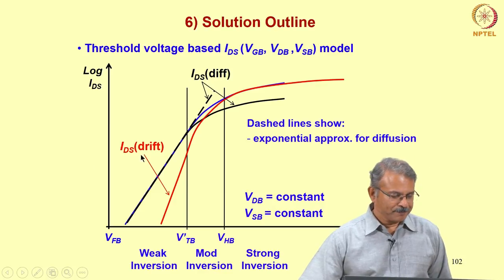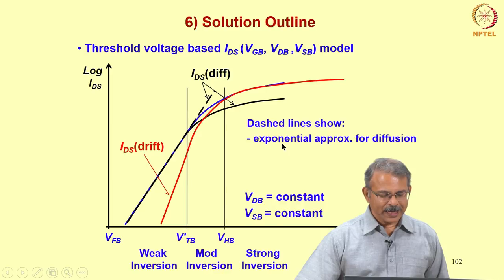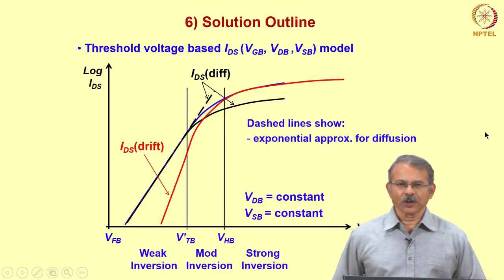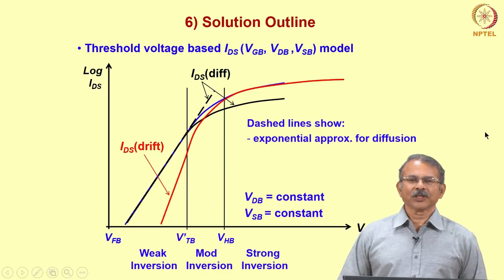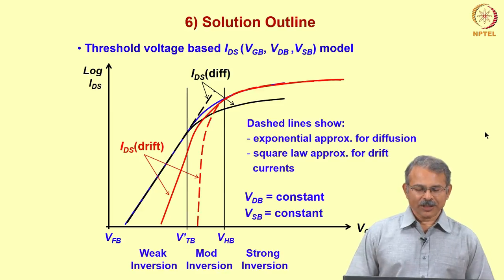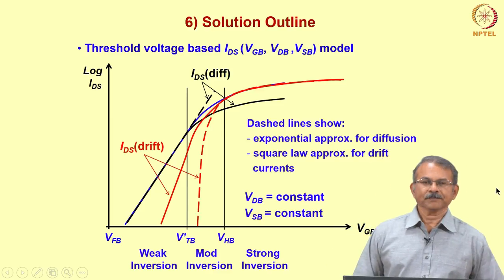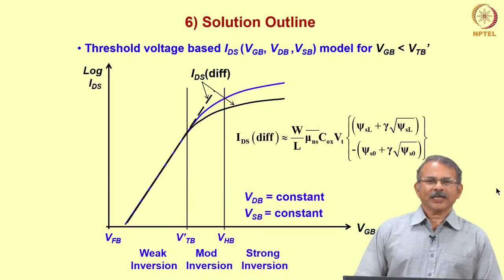The part of the behavior in weak inversion on a semi-log plot is a straight line and can therefore be shown to be an approximate exponential. For the drift current, we can get a square-law approximation, and the point where this begins is very close to the Vtb threshold voltage based on the 2φf + 6Vt criterion. So let us begin with the derivation, starting with the weak inversion regime where Vgb < V'Tb.